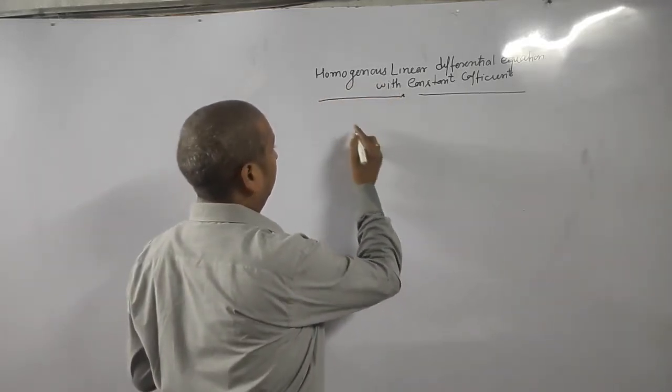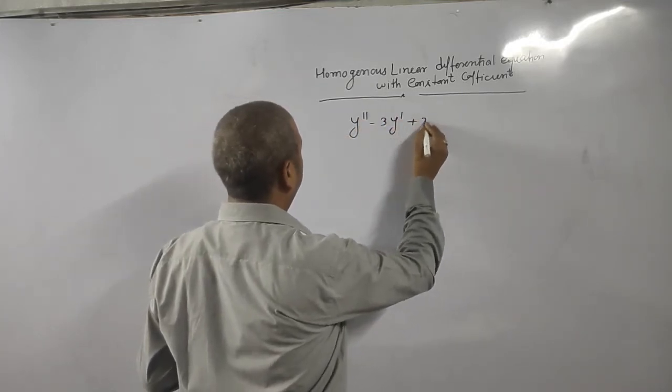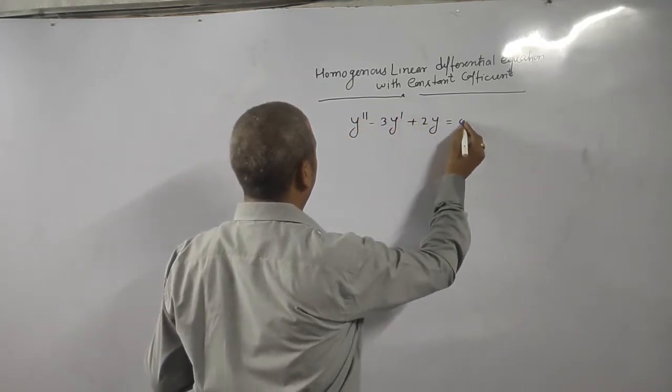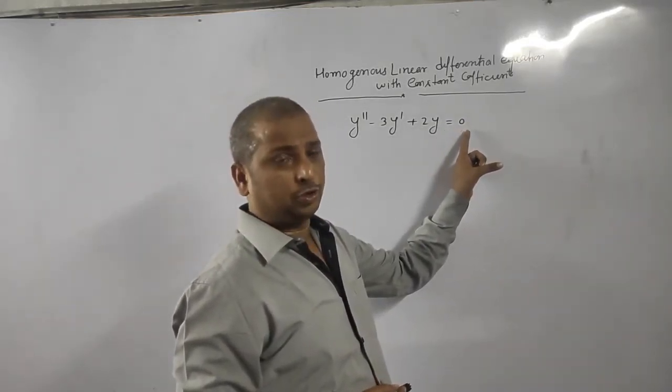Homogeneous means y double dash minus 3y dash plus 2y is equal to 0. It means the right hand side value must be 0.